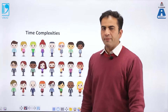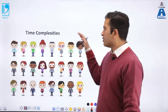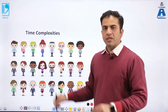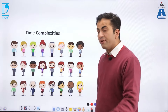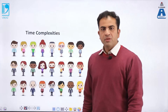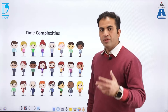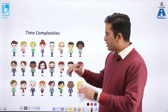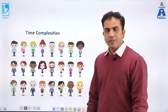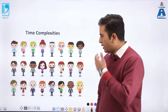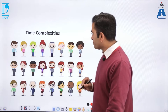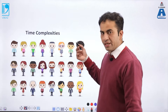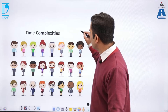To understand the concept of time complexity, let us have a practical example. There are 24 different children, and one of those children is having a pen. We have to identify which particular child is having the pen. There are three ways to do this — let us explore the first way.